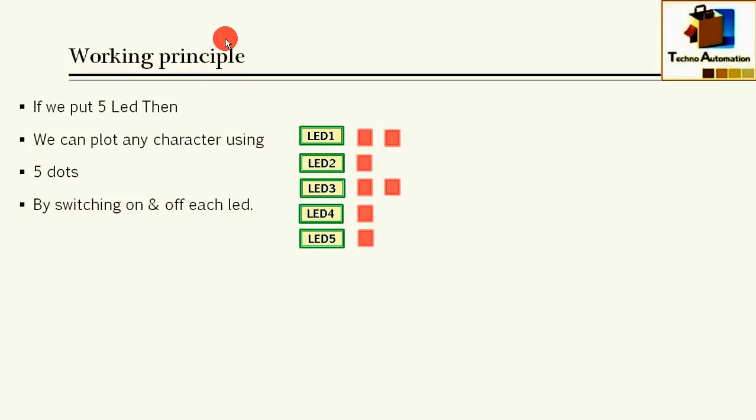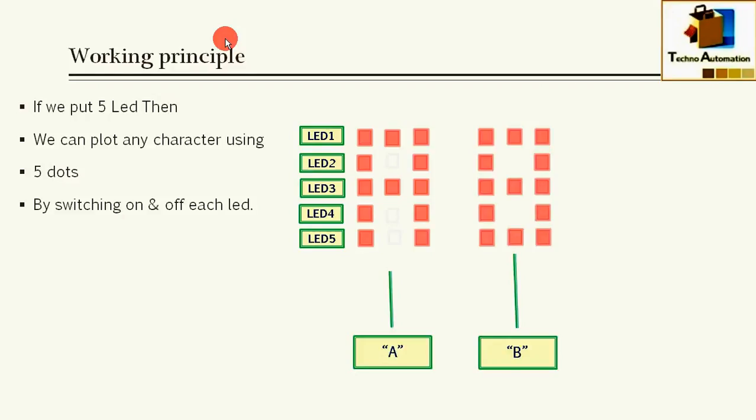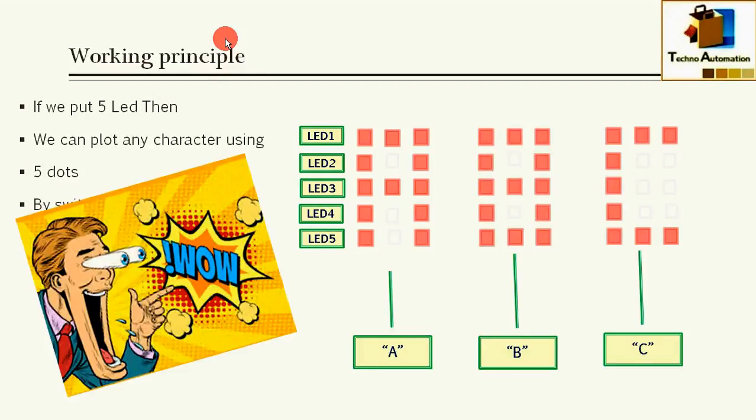To explain this scenario, if I switch on all 5 LEDs for first 5 milliseconds, in next 5 milliseconds only first and third LED is switched on, and in next 5 milliseconds all LEDs are switched on, then we are going to see character A. Same way we can plot character B, character C, and any character.